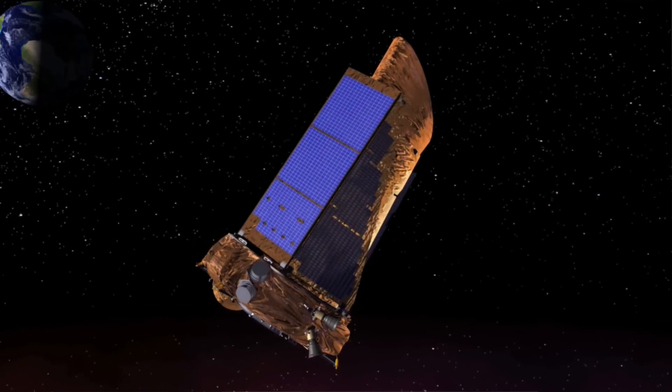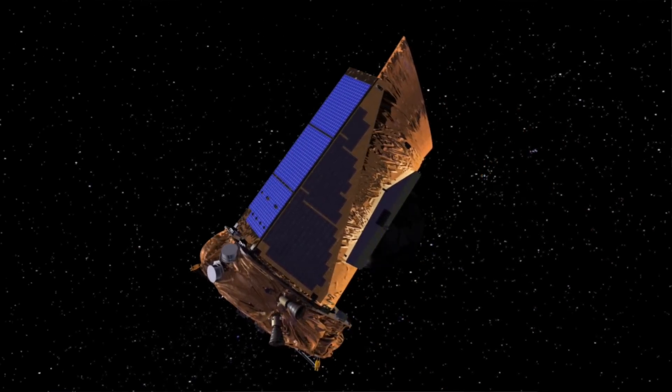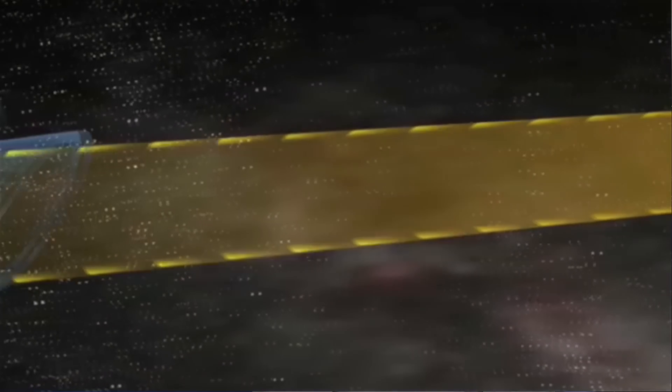Kepler is a spacecraft that's finding planets through the transit method. It looks at the light coming from a star. The goal of the Kepler mission, writ large, is to tell how common the Earth is.